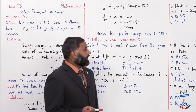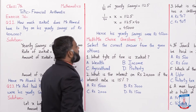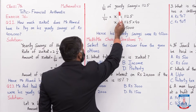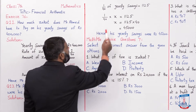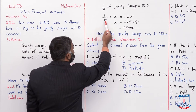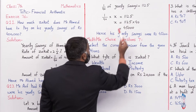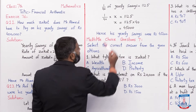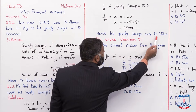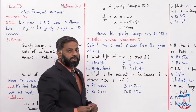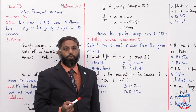1/40 × x = 1,125. Yearly savings hum ne let ki thi x, iski jagah x aayega. Ab x ki value find karni hai. 40 left side pe divide ho raha hai, right side pe ja ke multiply ho jayega. To x = 1,125 × 40 = 45,000. Hence, his yearly savings were rupees 45,000.